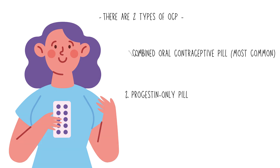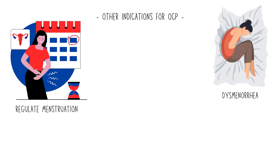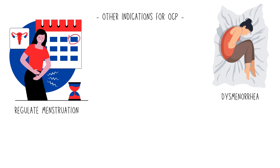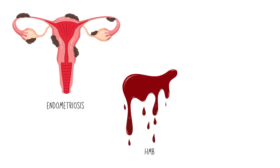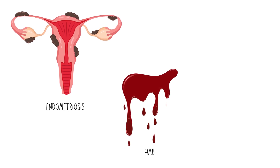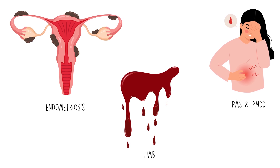Apart from contraception, these pills are indicated for the following conditions: to regulate menstruation when periods are irregular, in the treatment of dysmenorrhea or painful periods, polycystic ovarian syndrome, endometriosis, to reduce heavy menstrual bleeding, and to treat premenstrual syndrome and premenstrual dysphoric disorder.